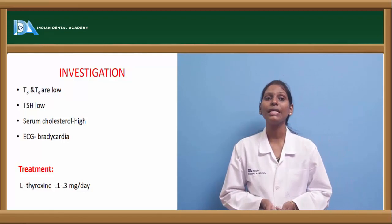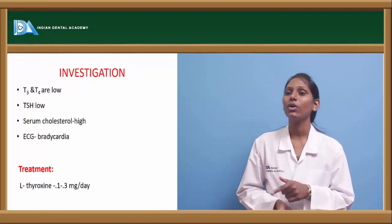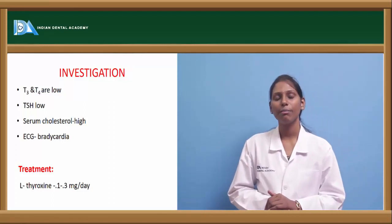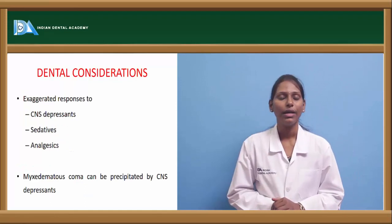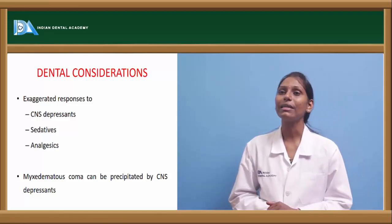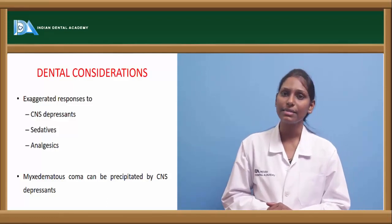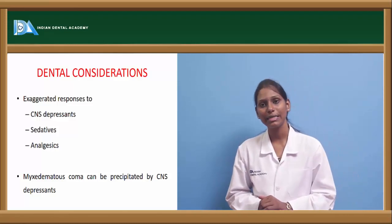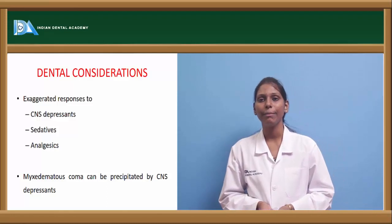Investigations for hypothyroidism show low T3 and T4, elevated TSH, and high serum cholesterol. ECG shows bradycardia. Treatment involves supplementing T3 and T4 with L-thyroxine 1–3 mg per day, which must be taken lifelong and should not be skipped. Dental considerations include exaggerated responses to CNS depressants, sedatives, and analgesics, so drug interactions must be checked before prescribing. Myxedematous coma can be precipitated by CNS depressants.